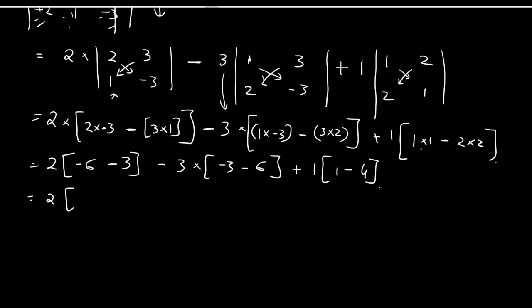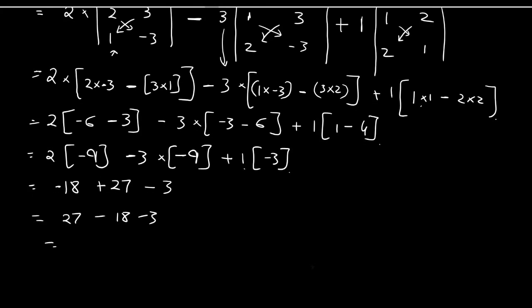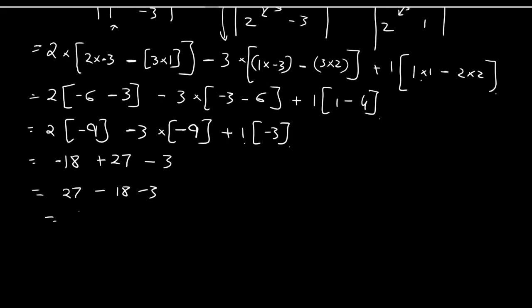So we get 2 times −9, which is −18; minus 3 times −9 giving +27; plus 1 times −3 giving −3. So the final answer is 27 − 18 − 3, which equals 6.